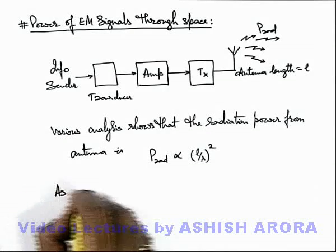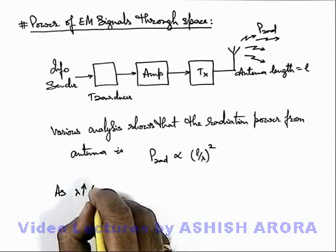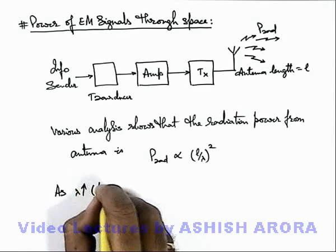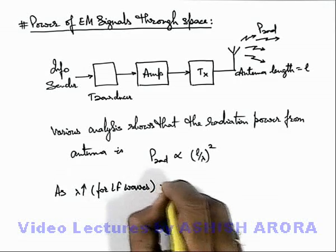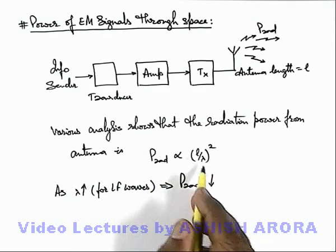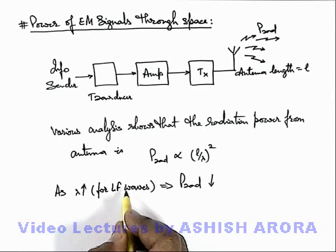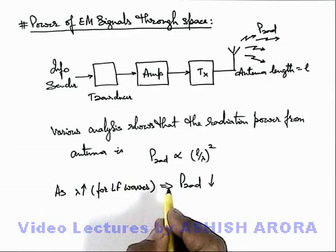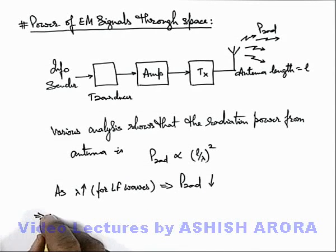So here we can write: as λ increases - λ is high for low frequency waves - this implies radiation power decreases. As wavelength increases for low frequency waves, if we decrease the frequency of transmission, then the radiation power decreases.